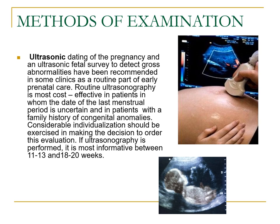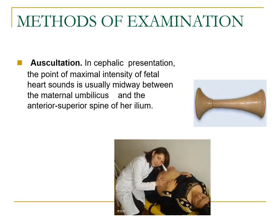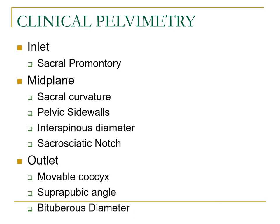Ultrasound is particularly effective in patients where the date of the last menstrual period is uncertain and in patients with a family history of congenital anomalies. Considerable individualization should be exercised in making the decision to order this evaluation. If ultrasonography is performed, it is most informative between 11 to 13 weeks and 18 to 20 weeks. We also have to auscultate. In cephalic presentation, maximal intensity of fetal heart sounds is usually midway between the maternal umbilicus and the anterior superior iliac spine. Fetal heart sounds can be heard as early as 17 weeks in multiparas with a trained ear, and by 22 weeks there is a 100% chance of hearing them.